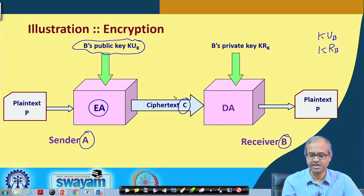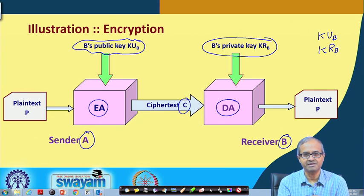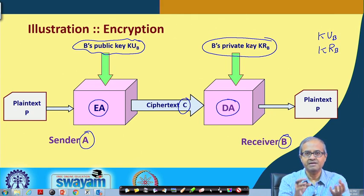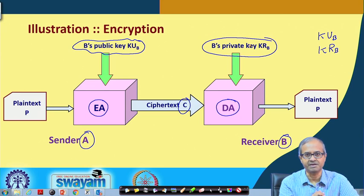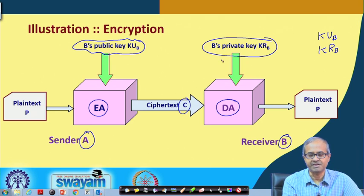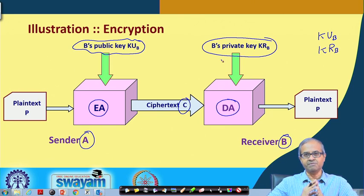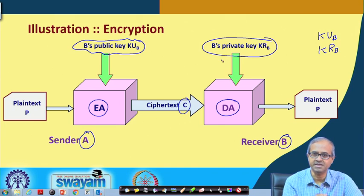What is the receiver doing? The receiver is running a decryption algorithm, and now this decryption algorithm is using B's private key, which is only present with B. This algorithm is designed such that if you encrypt using the public key then you can decrypt using the private key, or also the reverse - if you encrypt using the private key you can decrypt using the public key. In this case for encryption, we are encrypting using the public key which is known to everybody, but it can be decrypted only by the private key. So I can receive messages from many people because my public key is known to everybody, but no one else will be able to decode those messages other than myself because only I have the private key.